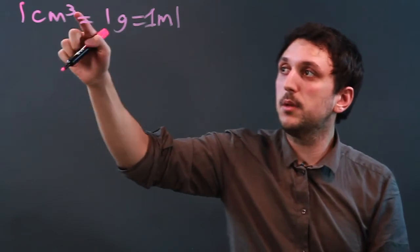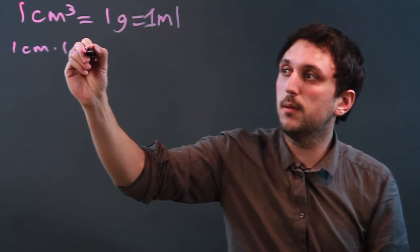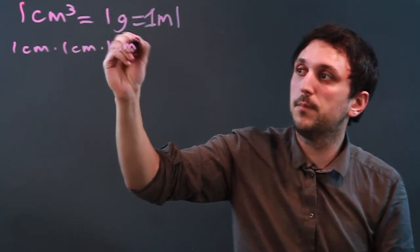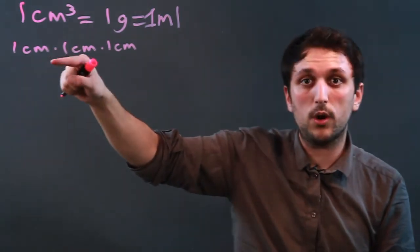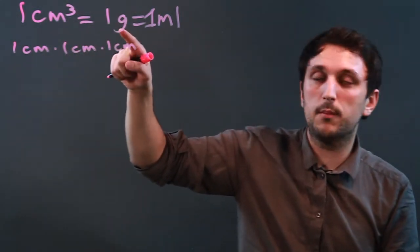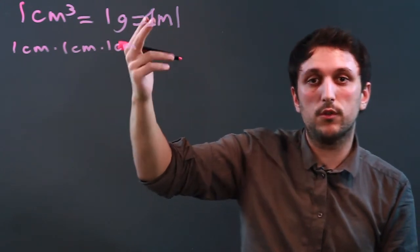So a centimeter cubed is one cm times one cm times one cm, which is length, width, and height. So if you had a little tiny box and you put water in it, you would get one gram of water, which is mass, or one milliliter of water, which is volume.